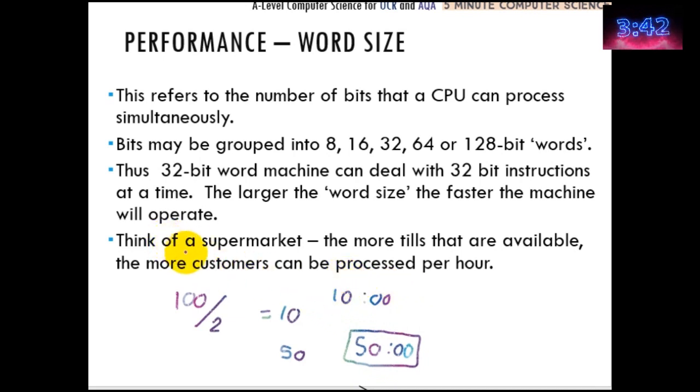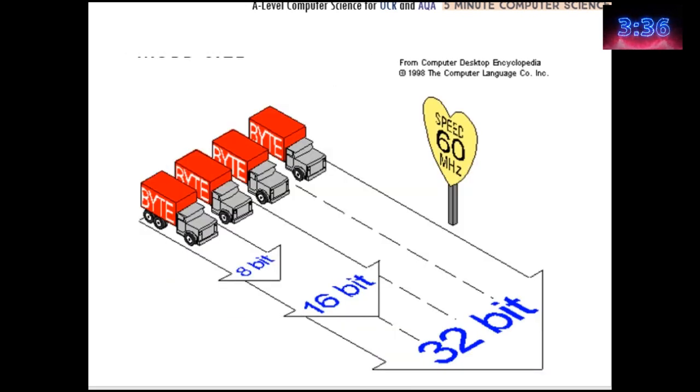So the size of the word makes a massive difference in terms of the amount of data the processor can get through. Here's an example for you to have a quick look at. So 8-bit or 16-bit or 32-bit, depending on the width of the word, far more data can be processed in any one go.